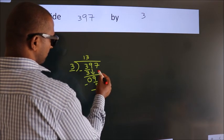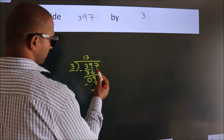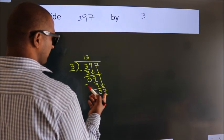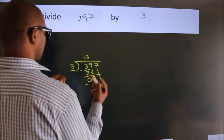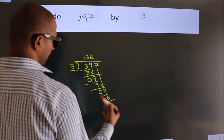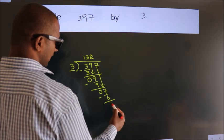After this, bring down the beside number. So, 7 down. So, 7. A number close to 7. In 3 table is 3 2's, 6. Now, we subtract. We get 1.